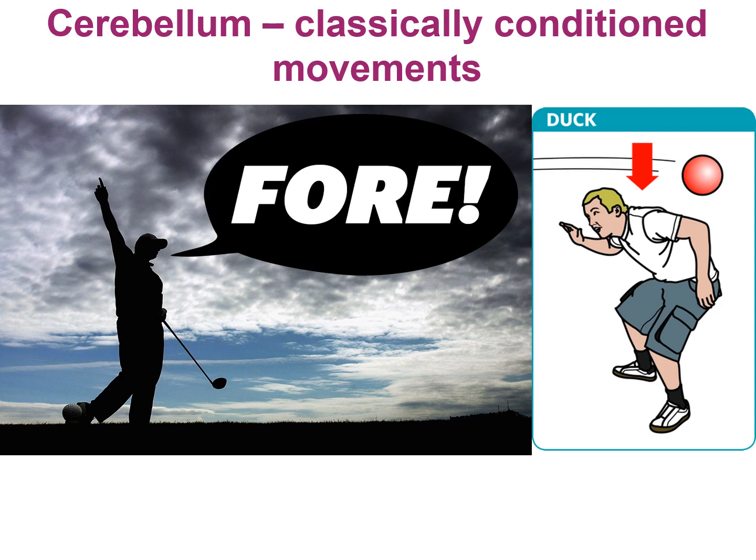Let's look at a classically conditioned reflex, because with the cerebellum, this learning can occur quite rapidly. For example, you're at a golf course, somebody yells 'fore' and you get hit. 'Fore' (F-O-R-E) is universal language for 'look out, I've hit a ball, brace yourself.' If somebody gets hit on a golf course after hearing 'fore' a couple of times, then hearing 'fore' becomes a conditioned stimulus, and the conditioned response is that reflexive movement of bracing yourself, ducking, putting your hands on your head. That is a far more simplistic and rapid process, requiring less repetition than the complex learning involved in throwing a dart.